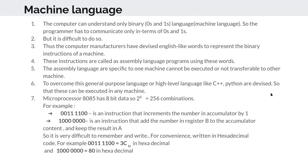To overcome the machine-specificity of assembly language, general-purpose high-level languages like C++, Python, etc. were devised. For example, a Sun Microsystem machine may have a different microprocessor than a Windows-based system, yet Python runs on both. High-level languages sit on top of all hardware, and compilers or interpreters are designed to convert the high-level code into the binary format of the respective local microprocessor.